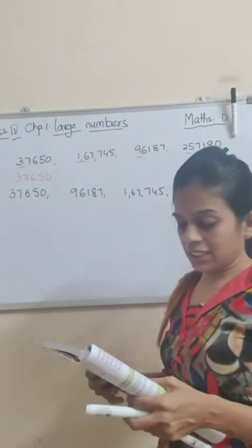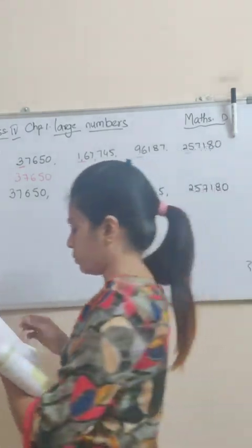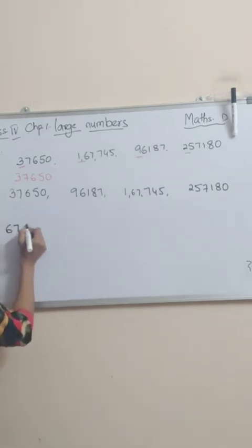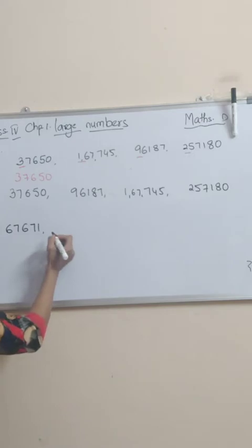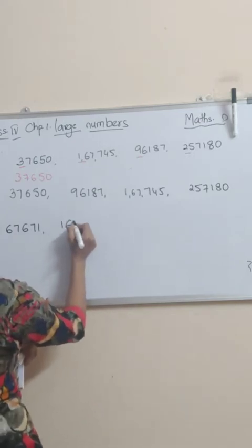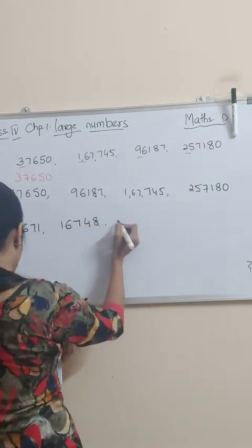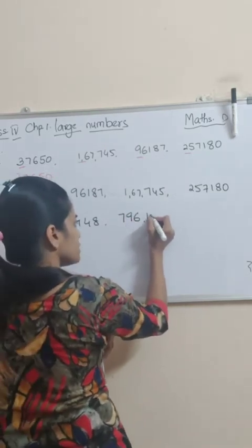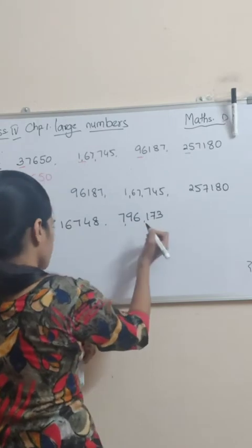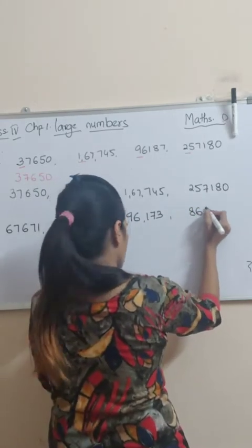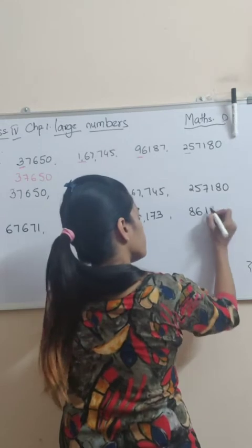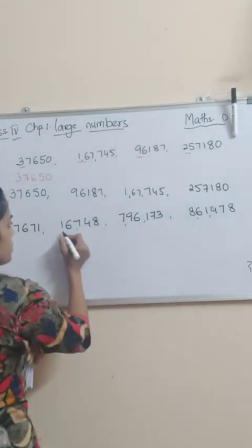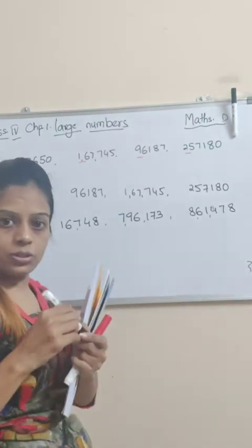Now I will show you for descending order — 1 bit. Bit number C, first one: 67671, 16748, 796, 173, 861478. Now see first — we will count the numbers: 1,2,3,4,5 — five; 1,2,3,4,5 — five; 1,2,3,4,5,6 — six; 1,2,3,4,5,6 — six. Yeh bhi six hai, yeh bhi six hai — inko chholdo. Pehle ham lehenge 5 wale.